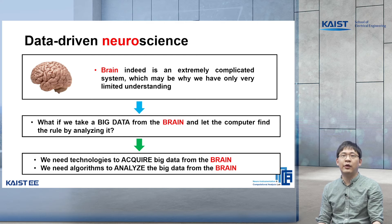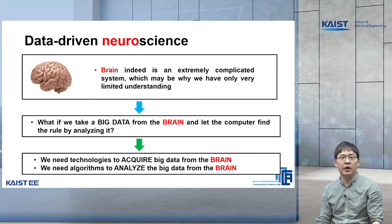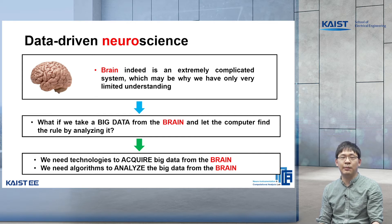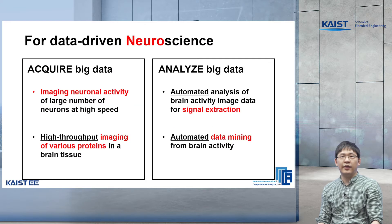Now, let's think about applying this to understand the brain. A human brain is an incredibly complicated system with about 100 billion neurons and 100 trillion synapses. So neuroscience might be the right place to take a data-driven approach. For that, we need technologies to acquire big data from the brain and we also need algorithms to analyze the big data from the brain. And that is exactly what our group is working on.